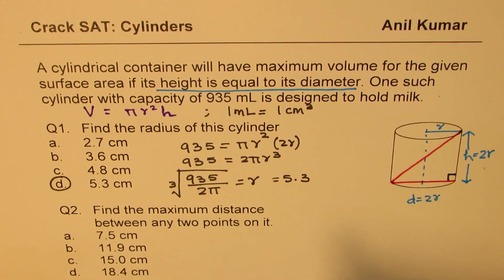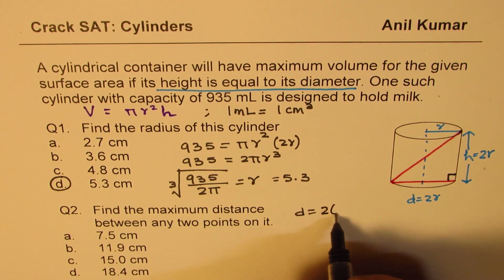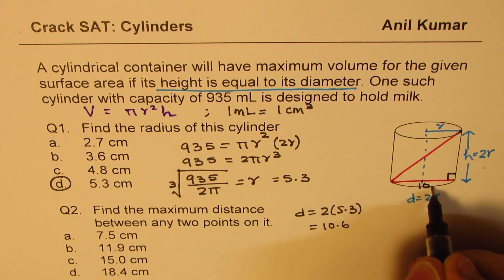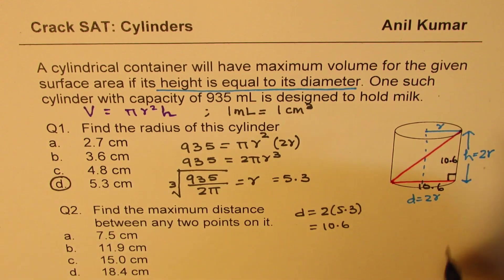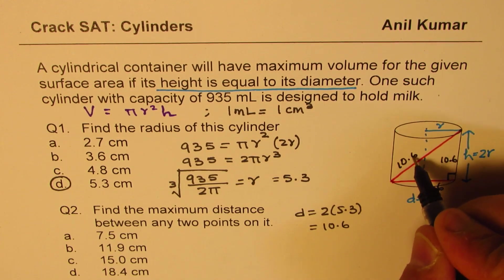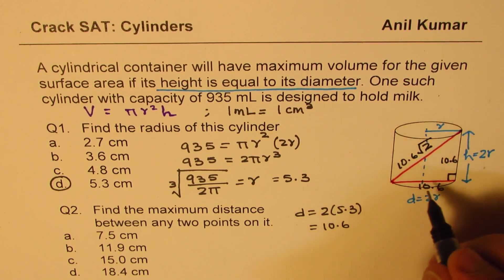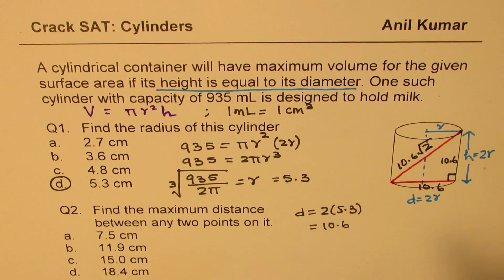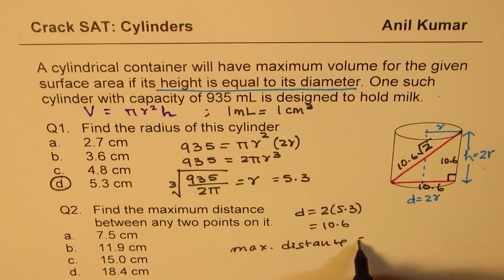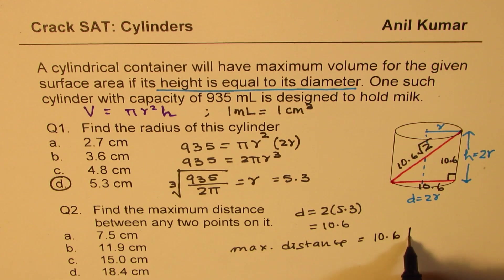So what is the diameter? Diameter equals 2 times 5.3, or 10.6. So this side is 10.6. The height is also 10.6. So this will be 10.6 times square root of 2. A squared plus B squared, square root. So that will give us the maximum distance.